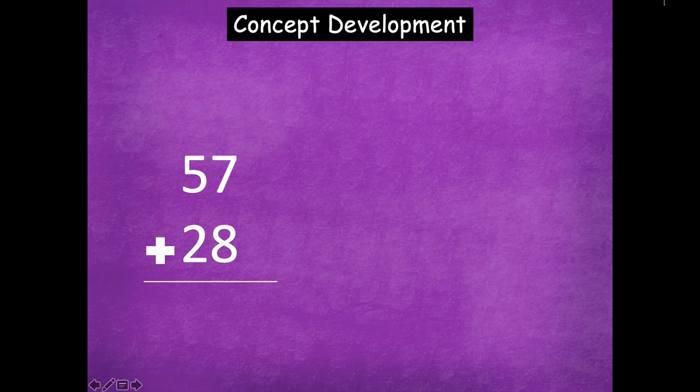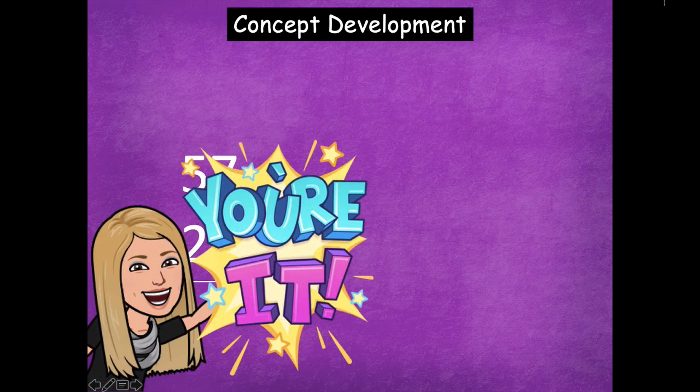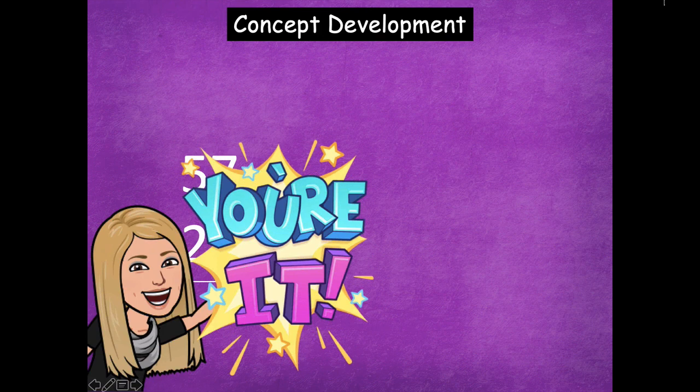All right, so let's look at another one. So we have 57 plus 28. So tag, you're it. Go ahead and pause the video. Draw your drawings of those numbers to represent 57 and 28 and then solve using your drawings and the vertical form. And then click play when you're ready to go over it together.